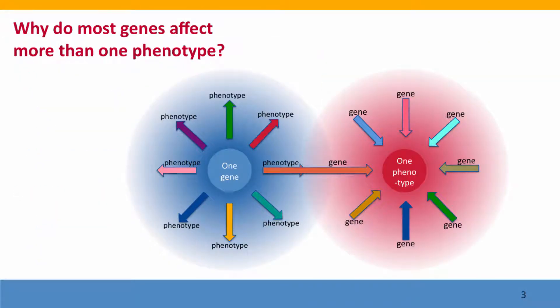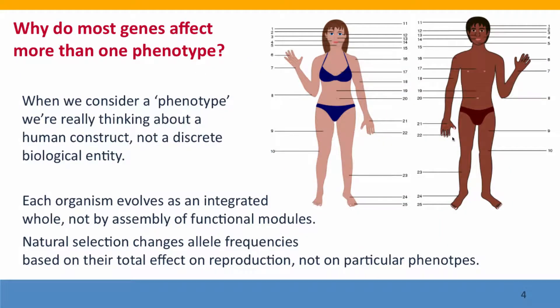So here's again the problem: why do most genes affect more than one phenotype? Why can't we have the nice simple situation we see in introductory genetics textbooks? The answer is that the whole concept of phenotype is something that geneticists came up with to make it easier to think about the properties of organisms. When we think about a phenotype — an aspect of an organism — we're thinking about human constructs: the length of a finger, the color of eyes, the texture of hair. We picked those out as individual things to think about, but that's not how evolution works, and that's not how organisms come to have the properties they do.